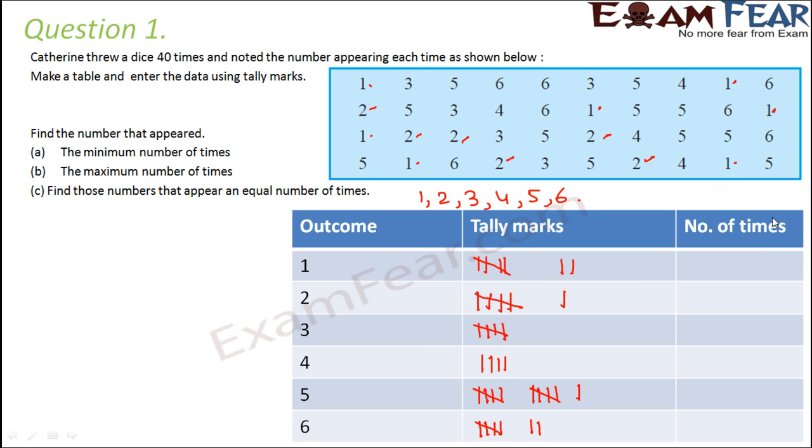Now the number of times is nothing but the frequency. This is just writing the tally marks in number. So this group is 5, plus 2 is 7. Here, this is 5 plus 1 is 6. This is 5. This is 4. This is 5 plus 5 plus 1, that is 11. This is 5 plus 2, which is 7. So in this fashion, we could prepare the table using tally marks.